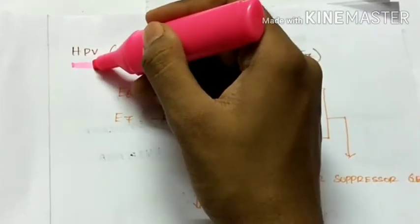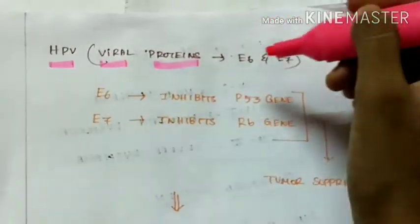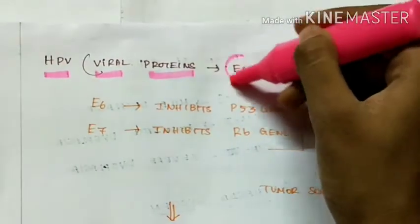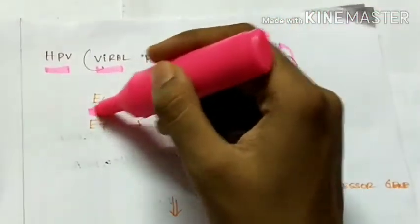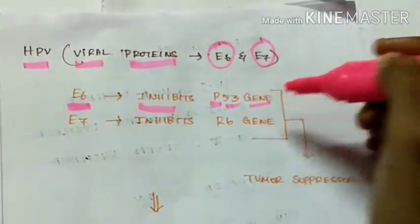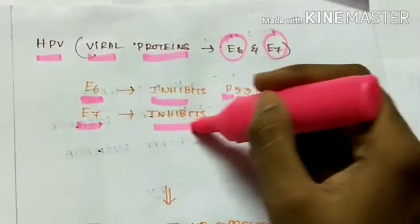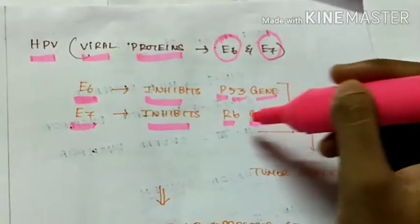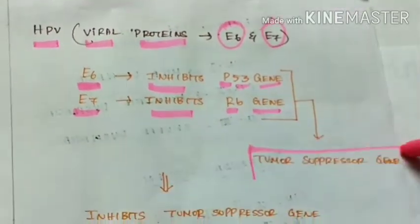The human papilloma virus is made up of certain viral proteins. The important among them is E7 and E6. The E6 inhibits the P53 gene which is a tumor suppressor gene and the E7 inhibits RB gene which is retinoblastoma gene and this is also a tumor suppressor gene.